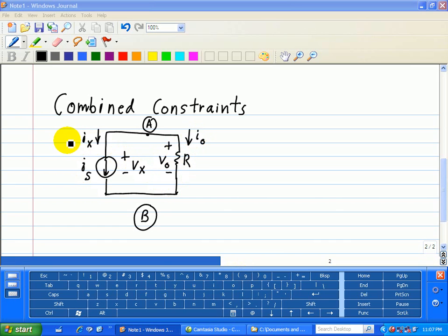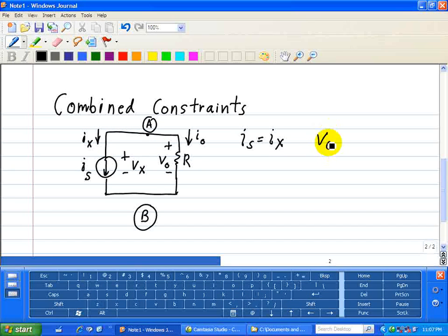First, let's start with the element equations. Here we note that IS is equal to IX from this drawing right here. Then doing Ohm's law for our VO, we know that VO is equal to IO times R. So those are our element equations.